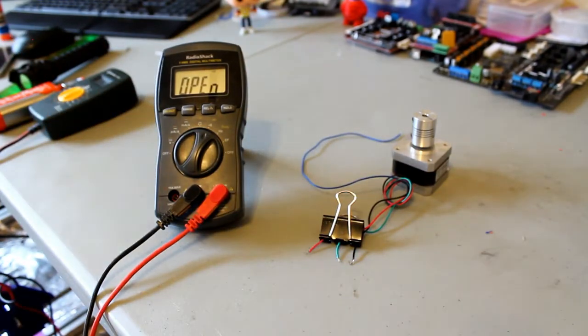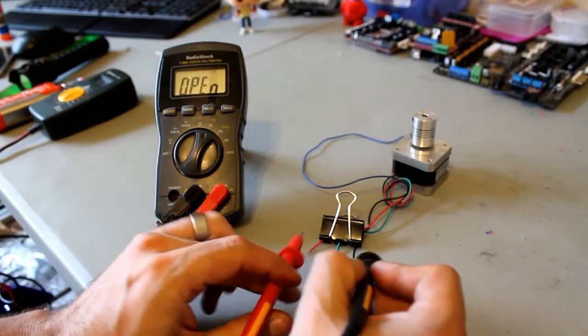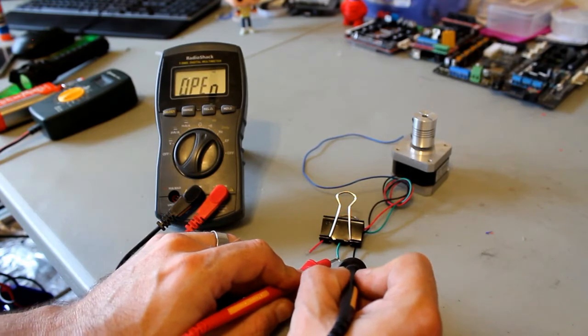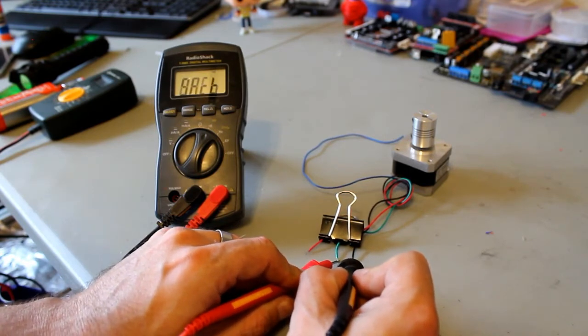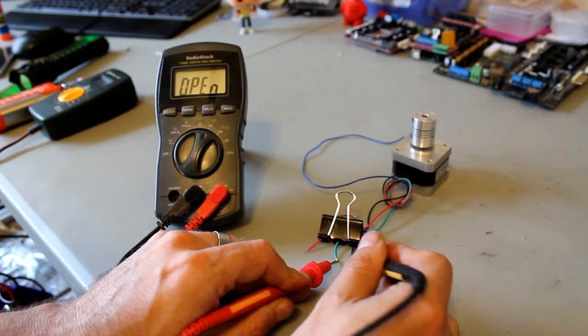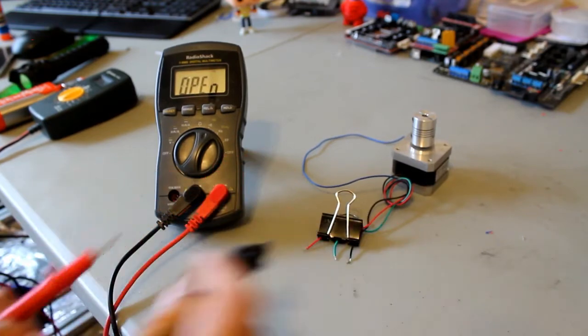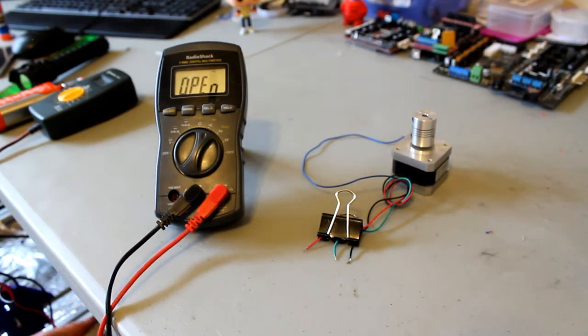However, to make sure that I'm correct, I'm gonna grab the leads now and test the other two to make sure that they're also a coil. You see, none of the other wires make a sound. So these two are a coil, and the red and the blue one are a coil in this particular case.